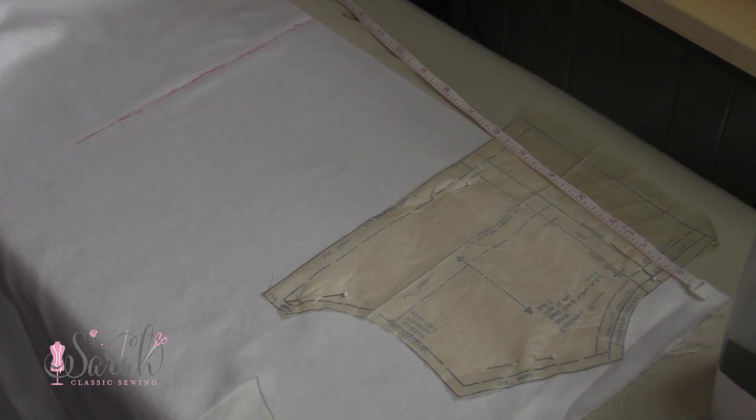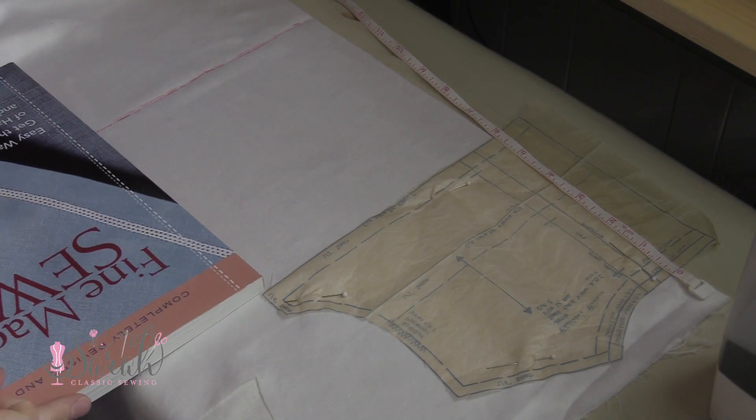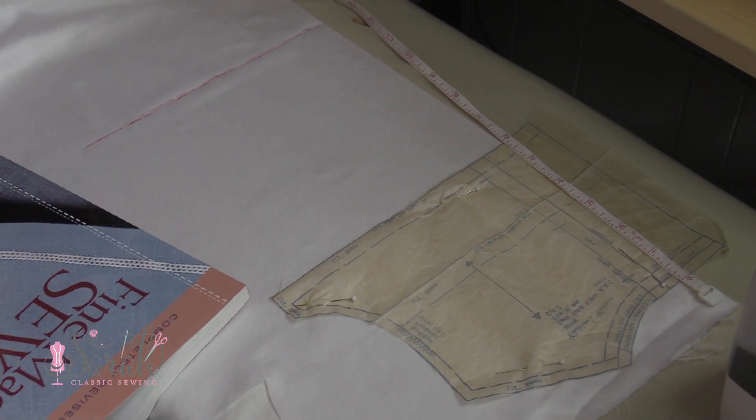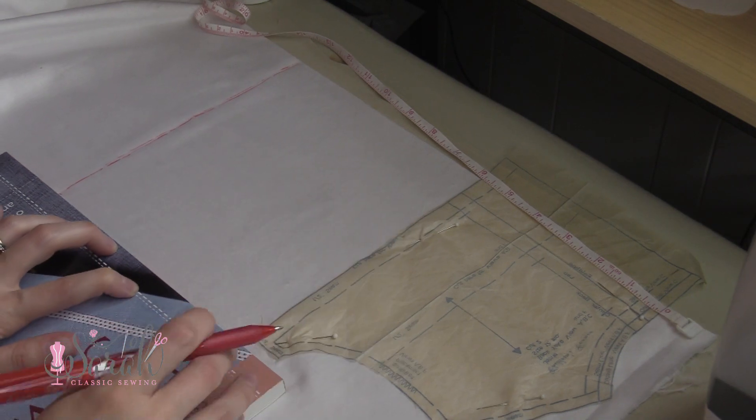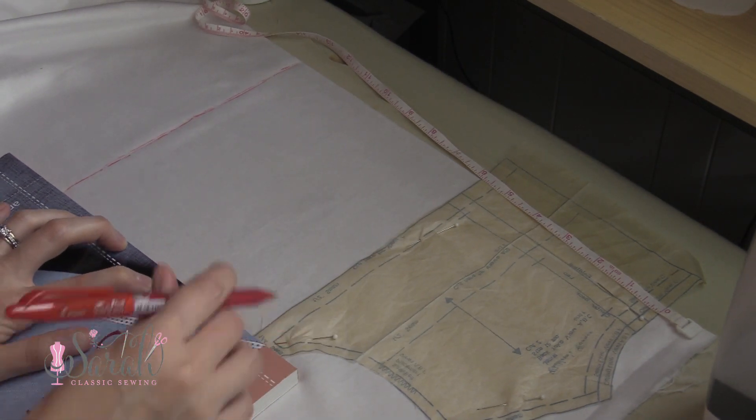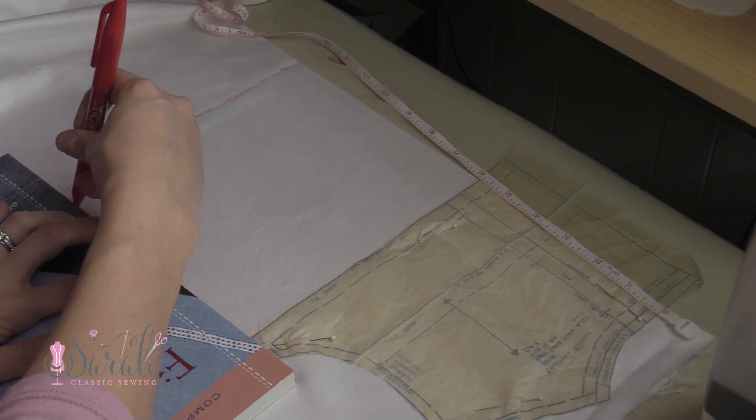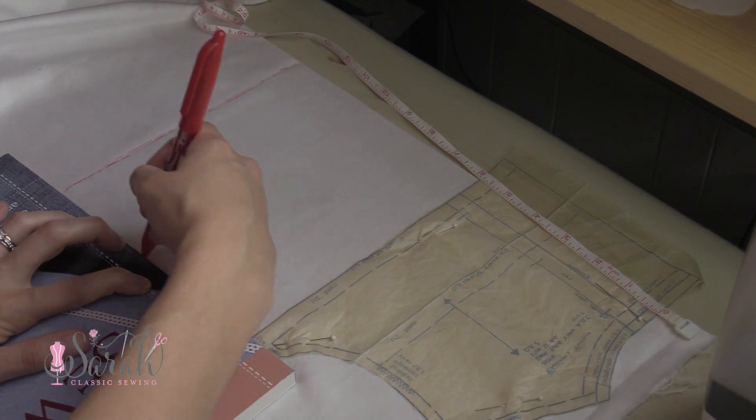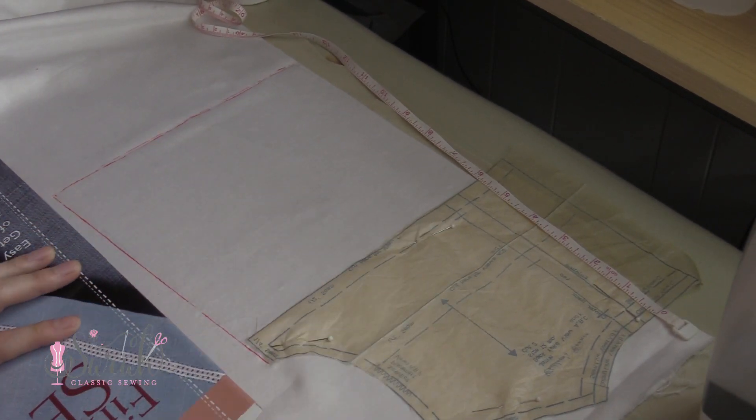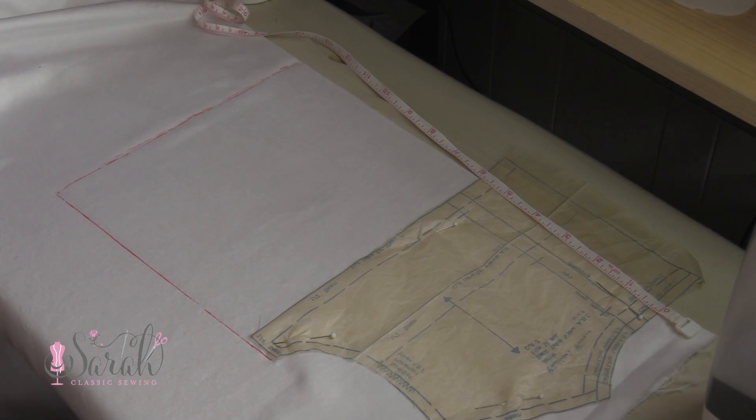Then I took a straight edge, which happened to be the book on fine machine sewing since I couldn't find my quilting edge. Just a side note, I bought this book a few months back and I've only had the chance to skim through it, but if you want a very thorough heirloom type of book, this seems like a great choice and I will have it linked down below.